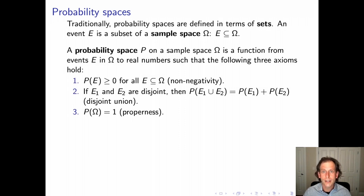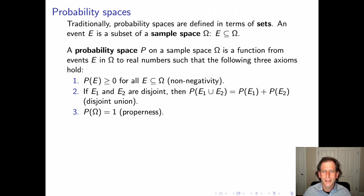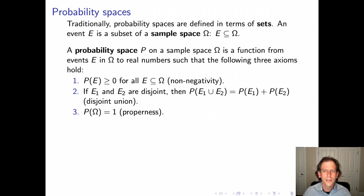A probability space on a sample space is a function from events to real numbers satisfying three axioms. First, non-negativity: any event must have probability greater than or equal to zero. Second, disjoint union: if two events are disjoint — their intersection is the empty set — then the probability of their union equals the sum of their individual probabilities. Finally, properness: the probability of the sample space itself is 1.